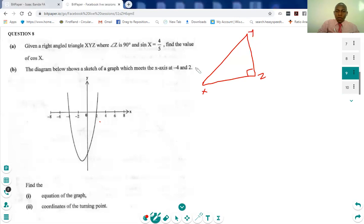So we are told that sin x, sin of the angle at x, is equal to 4 over 5. Now from the trig ratio, let's just do a recap.